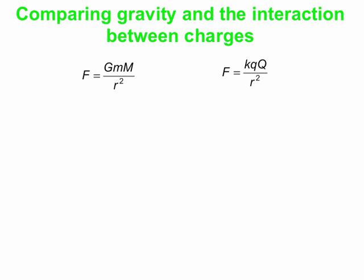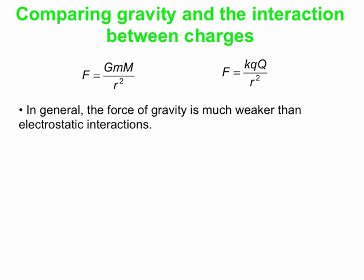It depends on the product of a property of one object and a property of the other — it's m times m in the case of gravitational interaction, it's q times q in the case of the electrostatic interaction. And then we simply have a constant in each case that gets the units right. One thing to note: in general the force of gravity is much weaker than electrostatic interactions.